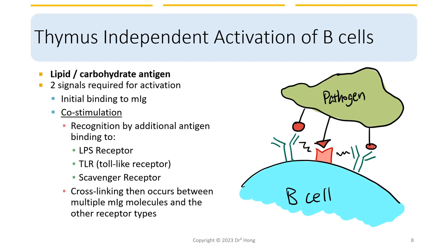There should be some type of initial binding to membrane-bound immunoglobulins. In addition, it also needs co-stimulation by additional antigen binding to receptors that are not very specific — pretty general — such as LPS receptors, toll-like receptors, and scavenger receptors. These receptors, in addition to being located on macrophages, are also located on B cells as well.